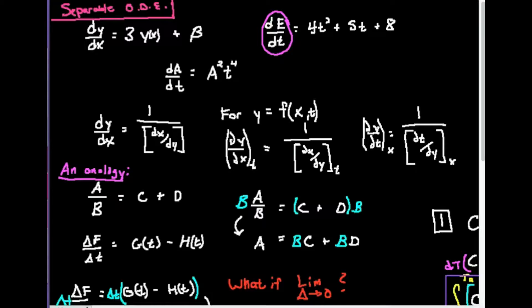Another example: this is also a differential equation, but here not only do I have the first derivative of Y with respect to X, I also have the function Y itself. And so this has the function itself and the function's derivative, but because it's in terms of a derivative, it's a differential equation. Another example: I could have the derivative of A with respect to T equal to A²T⁴. Even though I have A squared — the function squared — because there's a derivative in it, it's a differential equation.